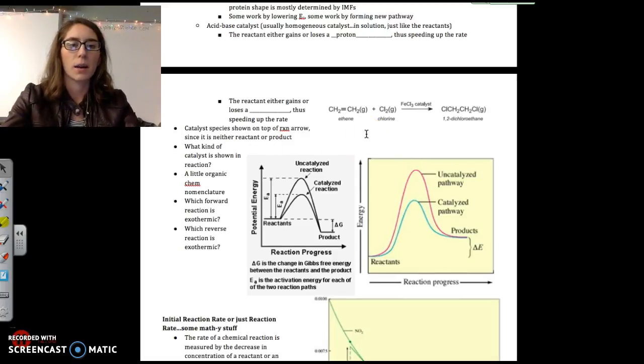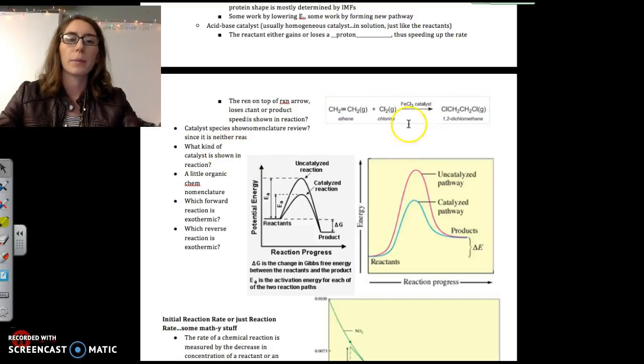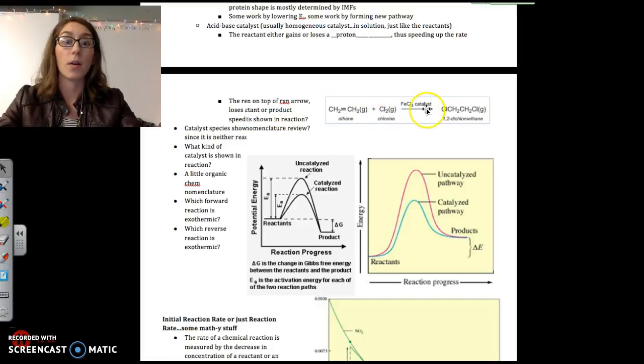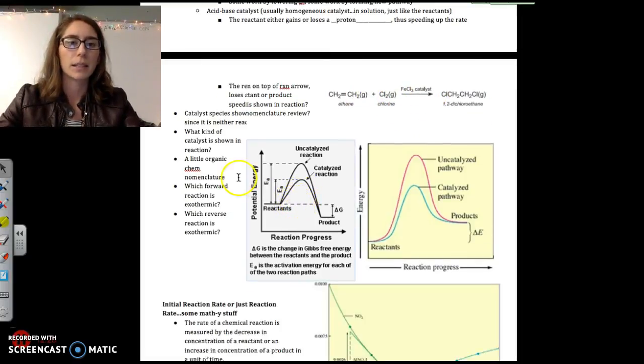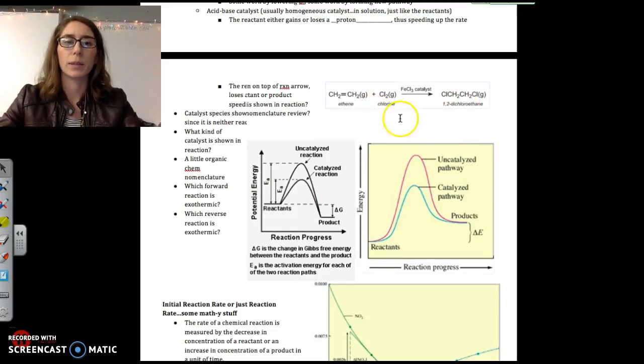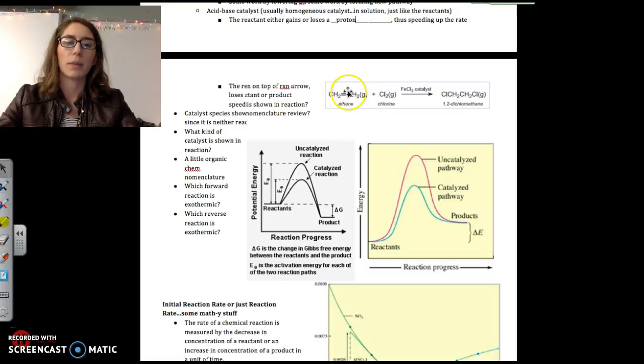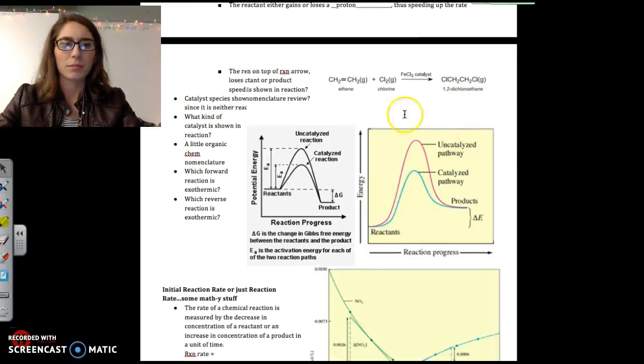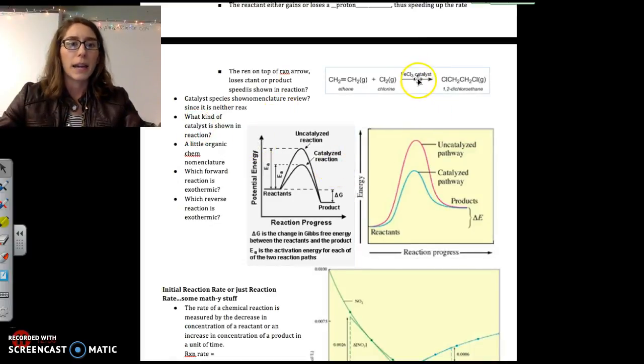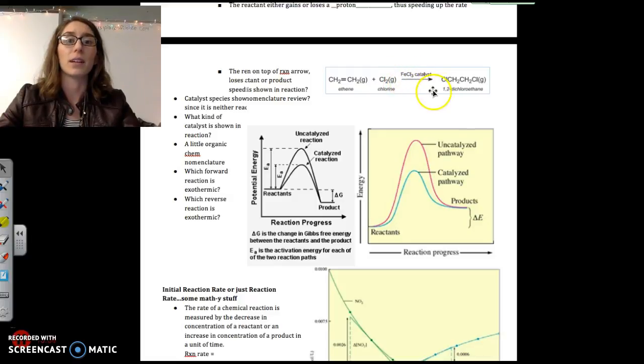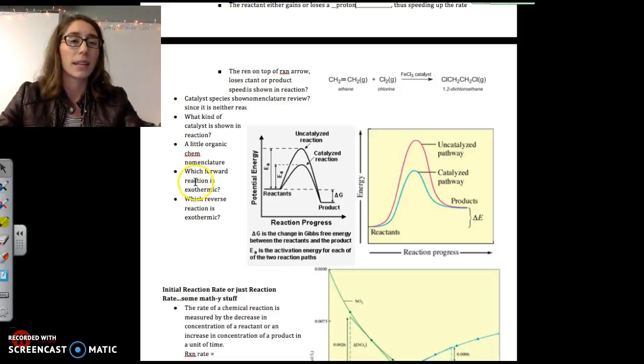Here is how we represent catalysts in reactions. Remember I said it's not a product, it's not a reactant. We actually put the catalyst on the arrow to represent that it's involved but it's not a reactant or a product. We could do a little organic nomenclature review here. This is called ethene because we have two carbon backbone. And then the en ending means that the two carbons are double bonded. Ethane would be two carbon backbone, singly bonded carbon. And then maybe you can use that logic to figure out why 1,2-dichloroethane is called that. In this reaction, the type of catalyst that is shown, our best guess would be that it's a solid, a surface catalyst. Because FeCl3 is likely solid and these guys are all in the gas phase.